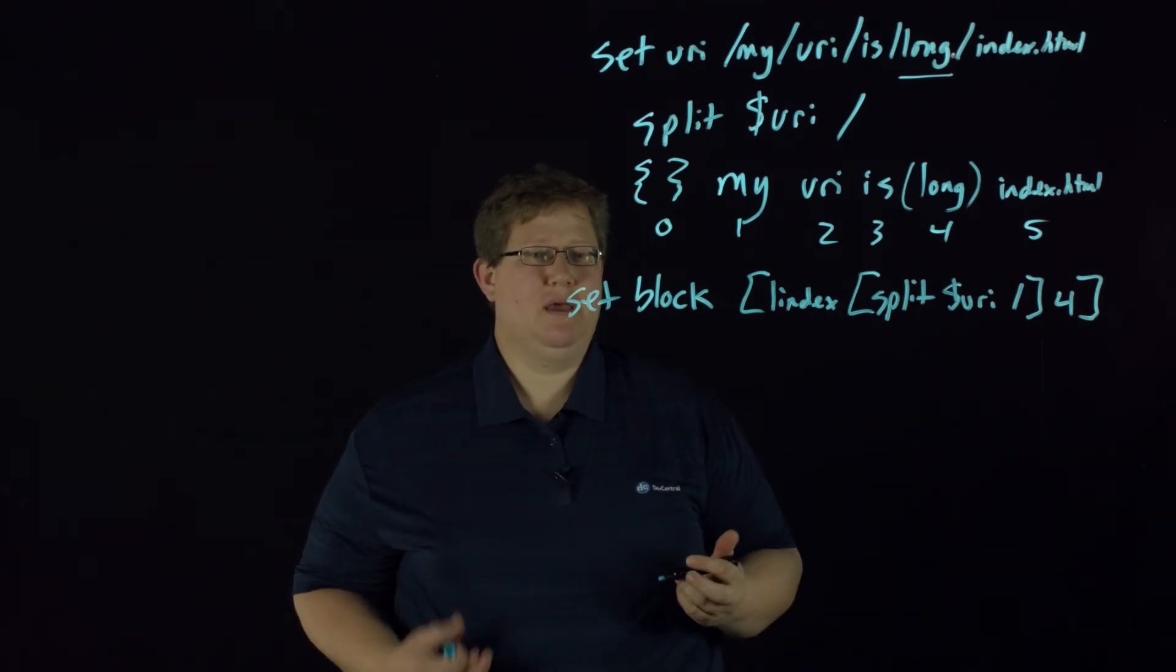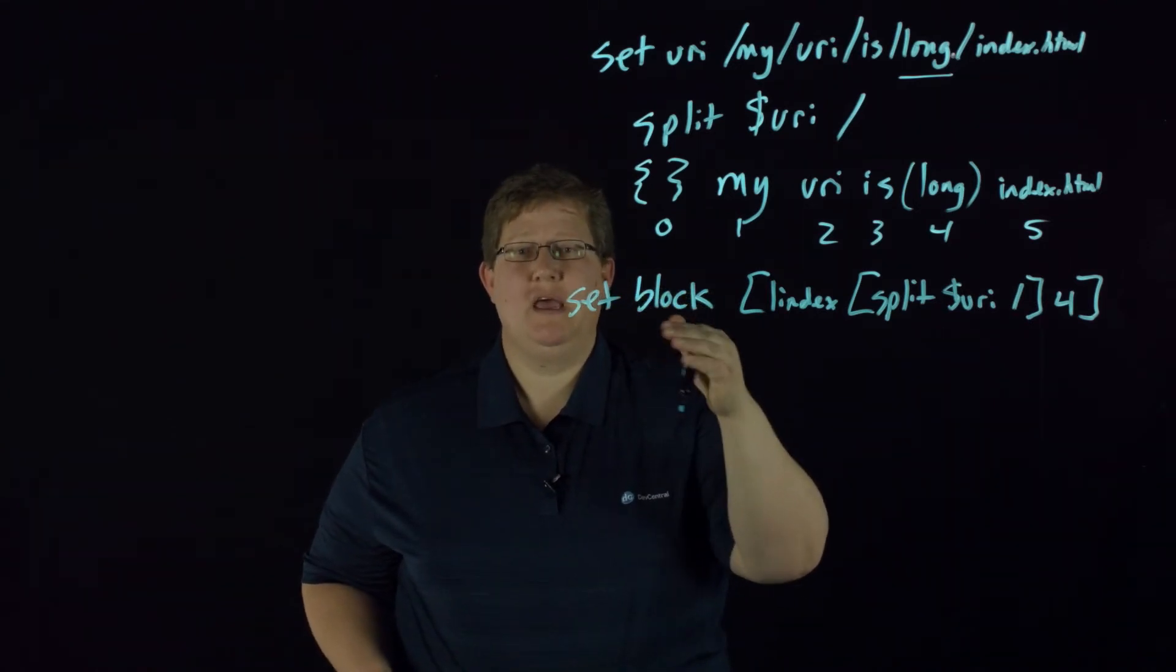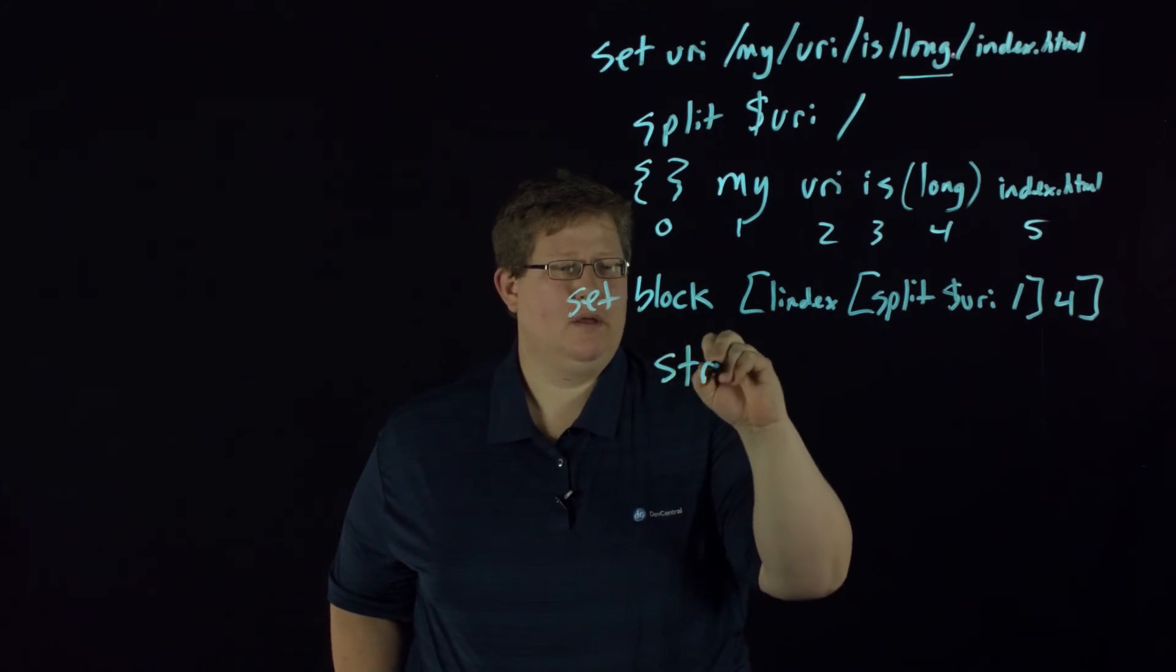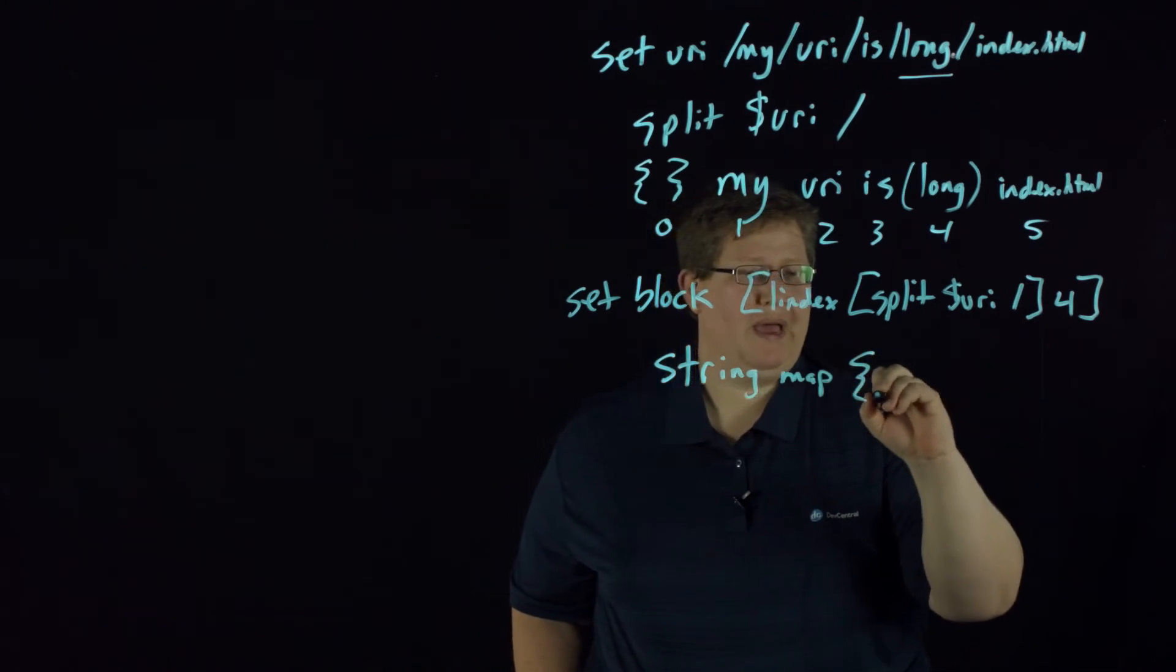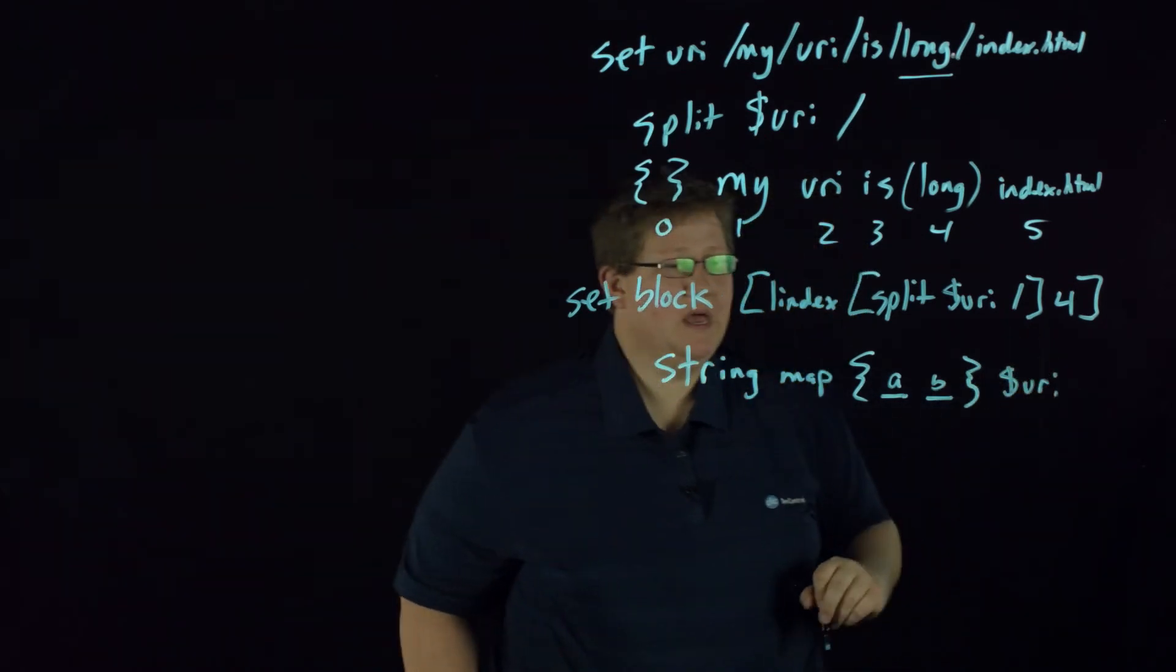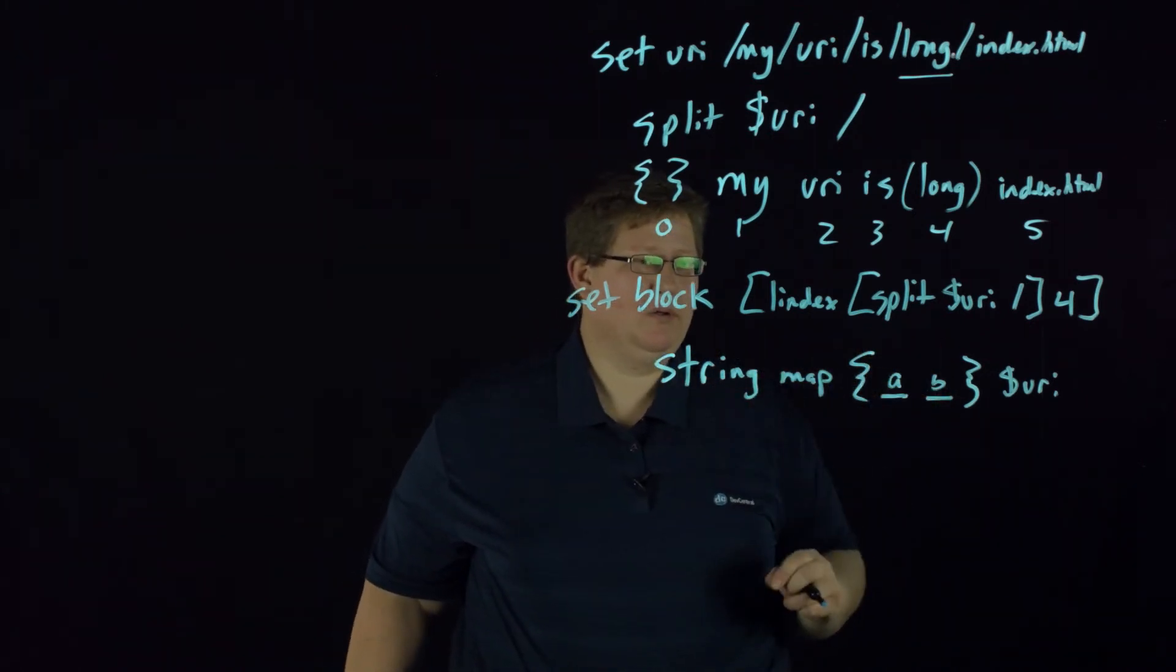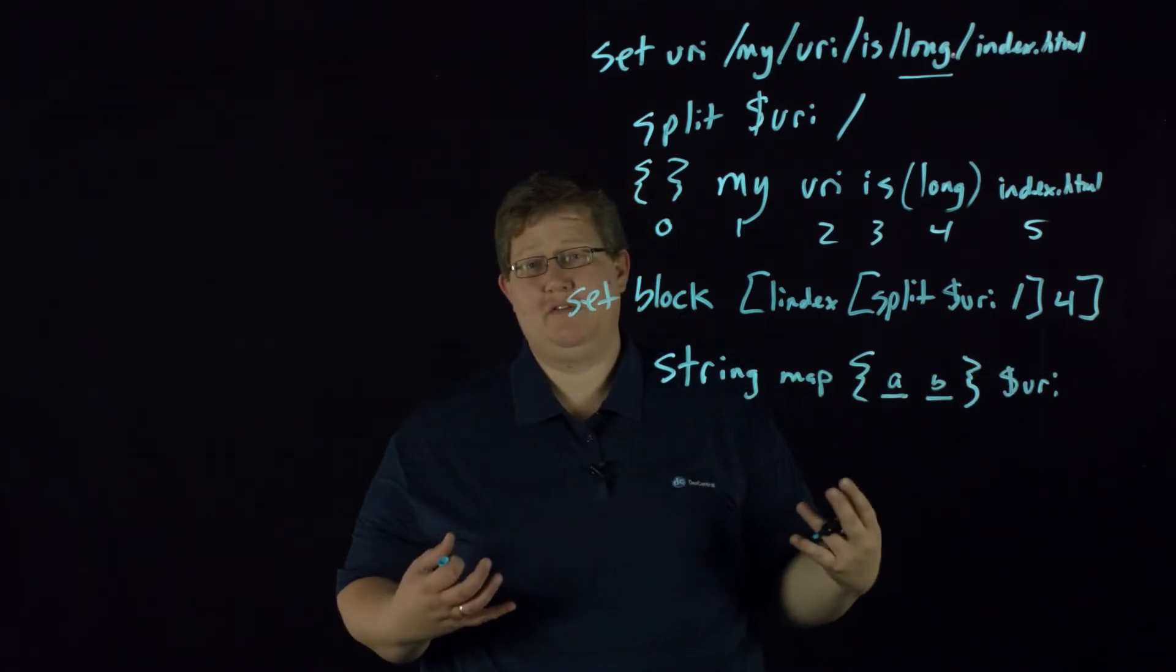The string map command allows you to take this block that we set and set it to whatever you want. There's a couple different ways you can do string map with variables. The standard format doesn't really work, and that is string map, usually pattern a, pattern b, and then URI in this case. That's not going to work because the curly brackets essentially tell Tcl that I'm not going to interpret anything in there. We set this to a variable, so that variable is not going to be interpreted, and it's just going to return what the URI was. So we have to use a different format.